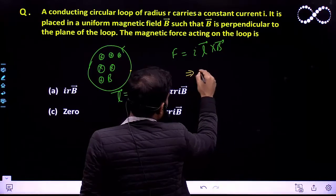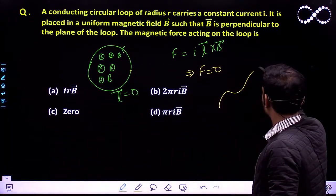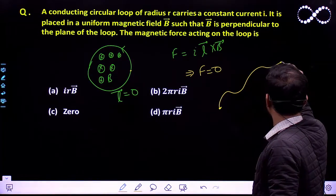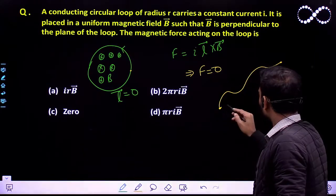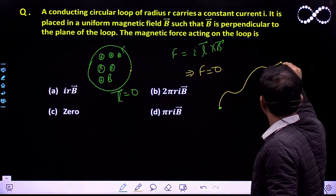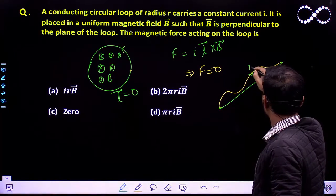Because if suppose this is a loop like this, so what I do: this is the starting point, this is the end point. So what I do I join one point to another point like this, and suppose the current is going in this direction I.